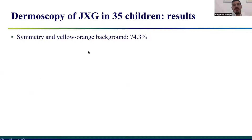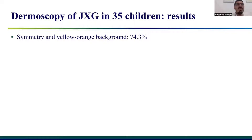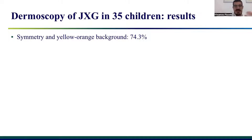First of all, the most important dermoscopic feature was that most juvenile xanthogranulomas were symmetric tumors. This is very important to distinguish them from melanocytic lesions or other tumors of the skin. The yellow-orange background was well represented in most tumors — more than 70% of patients presented with this feature.